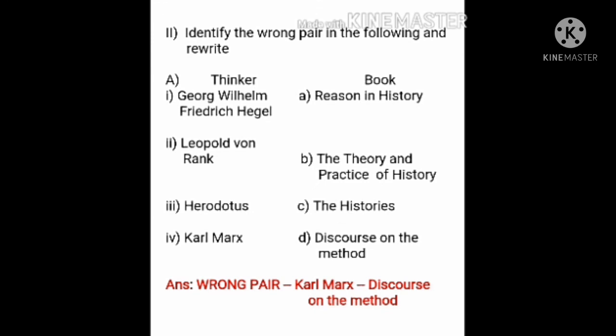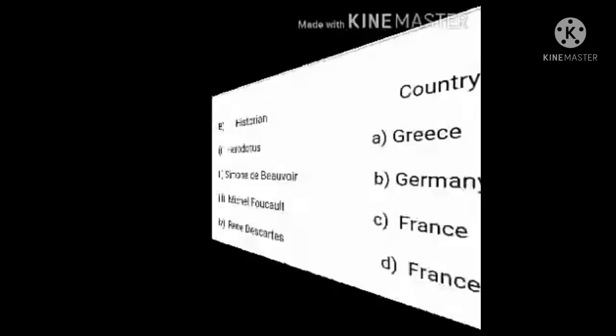Students, be very careful while writing 'Identify the Wrong Pair.' You have to follow strictly the board pattern. Write the words 'wrong pair,' then write the left side — that is Karl Marx — and then the right side — that is Discourse on the Method. This should all be on one straight line, or continue to the second line if the sentence is longer. Always write in this format only.